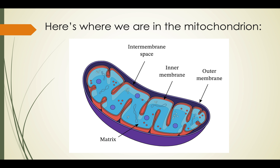We're still in the mitochondrion. Let's look at some of the structures we're going to be using this time. We kind of left off in the matrix — that's where the Krebs cycle is happening. For this part, we are going to exploit all this surface area. We have a double membrane, and that inner membrane has infoldings called cristae, which allows the mitochondrion to have more membrane.